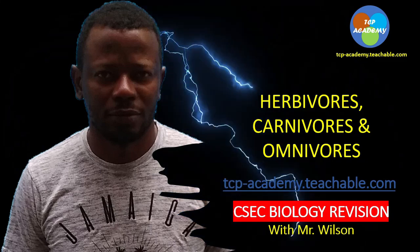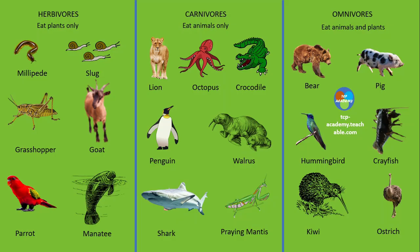Herbivores refer to animals that eat plants only. Examples would be a millipede, slug, grasshopper, goat, parrot, and the manatee.